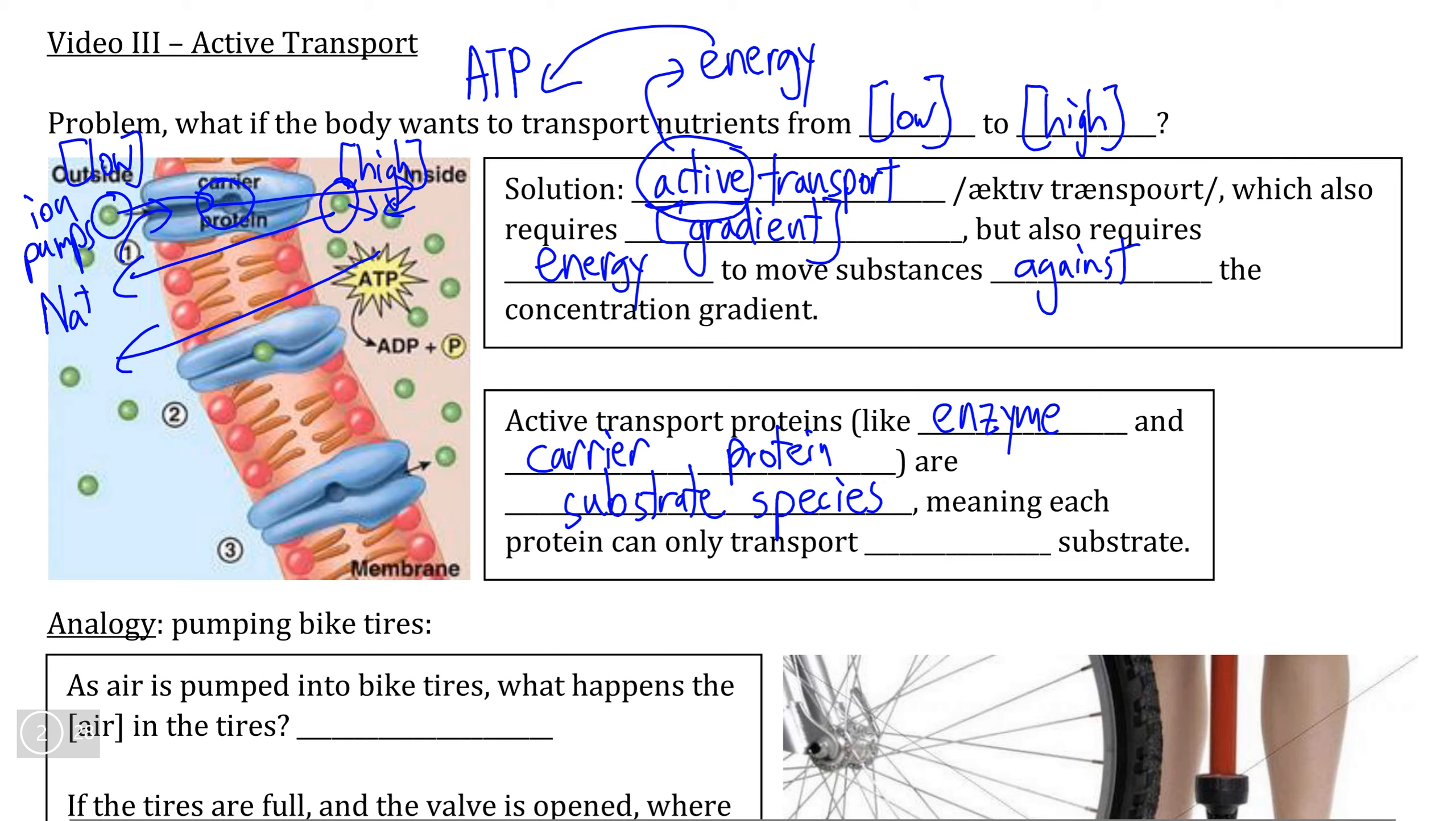This means that active transport proteins can only transport a single type of substrate, meaning that no other ion can fit into a carrier protein specifically intended for sodium.